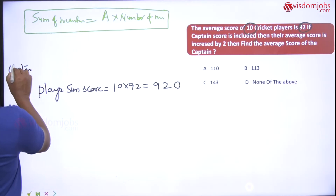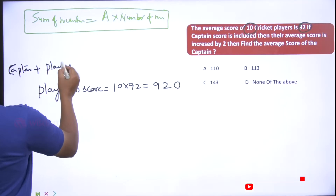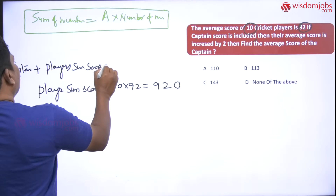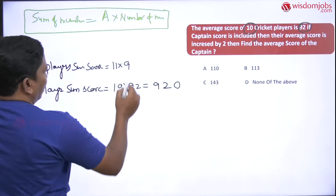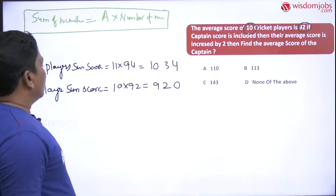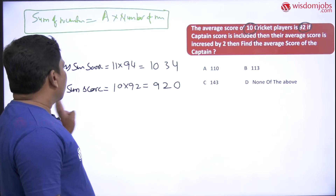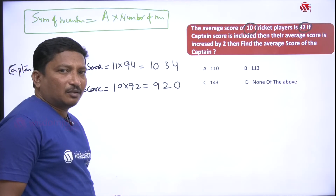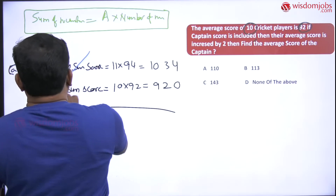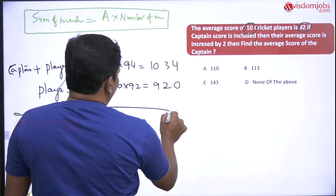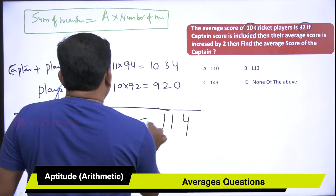Now, one more person — the captain — is added to the group. The initial 10 members become 11 members. With 11 members and the new average of 92 plus 2, which is 94, the total sum becomes 11 multiplied by 94, which equals 1034. So: captain's score plus players' sum of scores equals 1034.